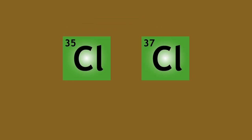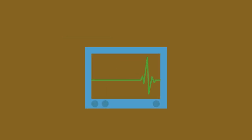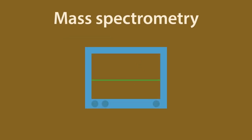All isotopes of an element have the same number of protons, but a slightly different number of neutrons. This concept of isotopes was actually discovered using an analytical technique known as mass spectrometry.